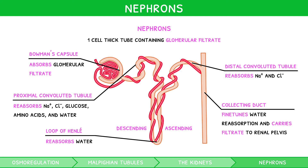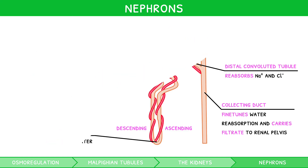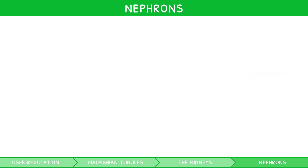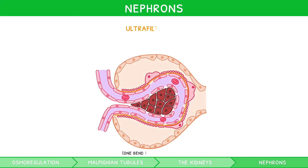So how is glomerular filtrate created from blood? Via the process of ultrafiltration.